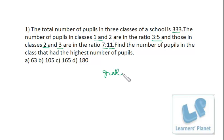So, grade 1, grade 2, and grade 3. The ratio is 3 is to 5, and here it is 7 is to 11.